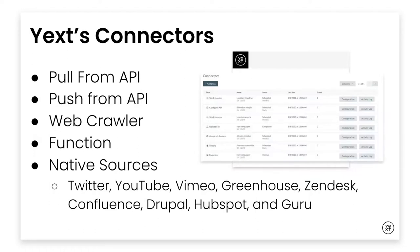Here's our connectors menu. Our connectors include pull from API, push from API, a web crawler to scrape information from live sites, functions as a source, and native sources including Twitter, YouTube, Vimeo, Greenhouse, Zendesk, Confluence, Drupal, HubSpot, and Guru. All these options provide flexibility to match your workflow, and this is really only the beginning as we continuously expand our connector integration options.